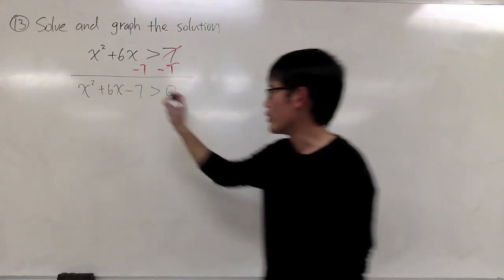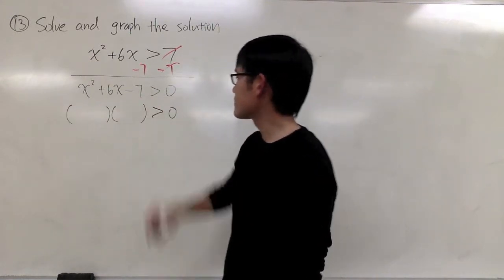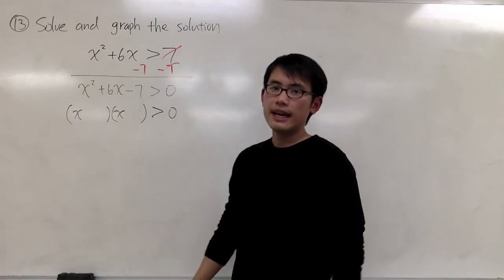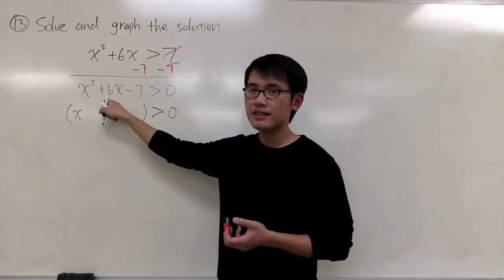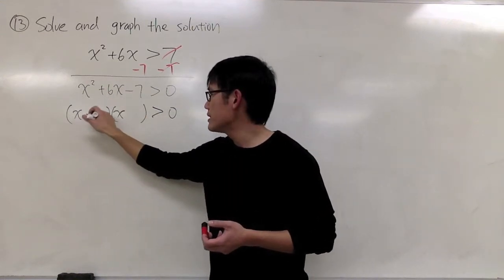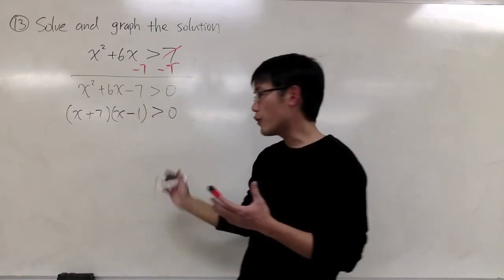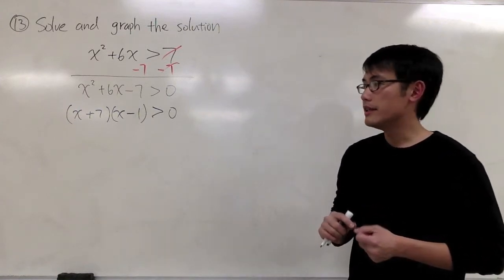As usual, we'll factor this out. This is factorable. I will need x and x. To get negative 7, those two numbers should add up to positive 6. I will need plus 7 and minus 1. So far this is exactly the same as how you would normally solve a quadratic equation.